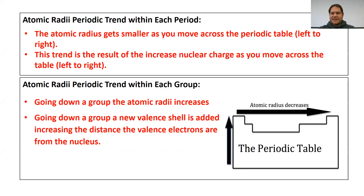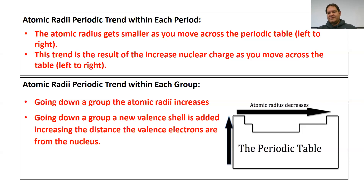To summarize: the atomic radius gets smaller as you move across the periodic table left to right, because of the increase in nuclear charge. Going down a group, the radius gets bigger because we're adding new electron shells, so the valence shell gets further from the nucleus.